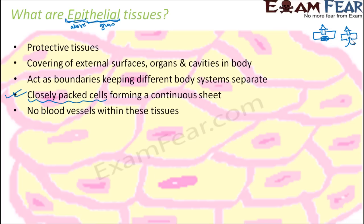No blood vessels are present within epithelial tissues — they are non-vascular tissues. Why don't they have blood vessels? Blood vessels transport nutrients and water through different parts of the body. Do epithelial tissues not need these nutrients? They do need them, but they get them through diffusion — by diffusion through their walls, they can exchange nutrients and water. So they do not need blood vessels.